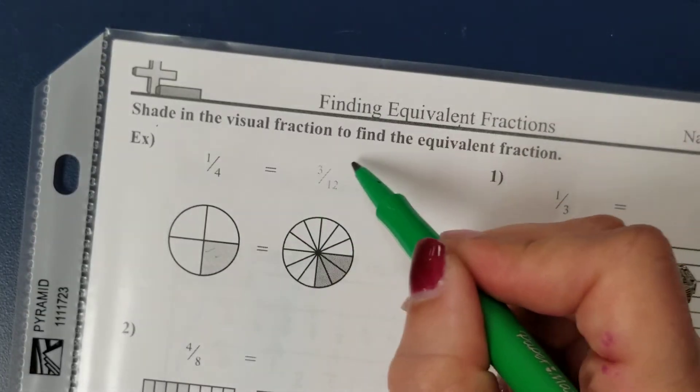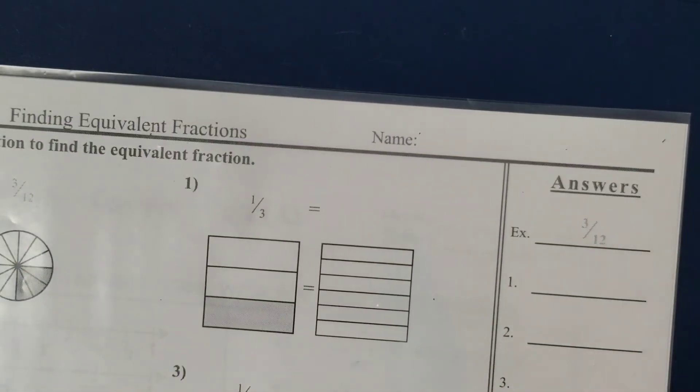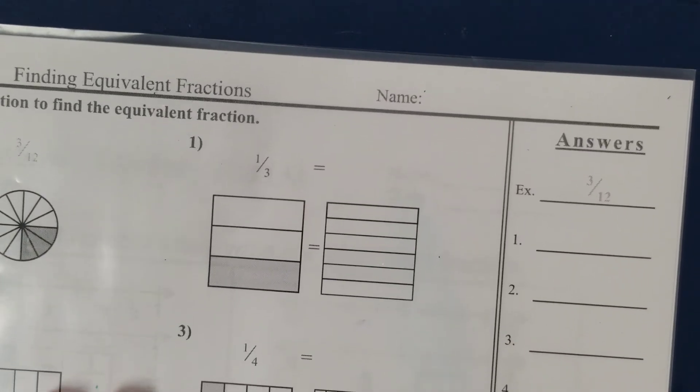So one-fourth is equivalent or equal to three twelfths. And they put our answer over here in this example. Let's look at number one together.